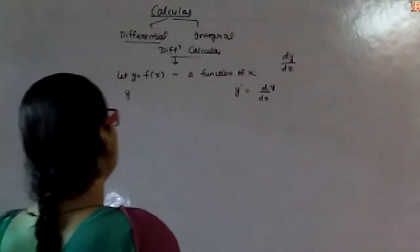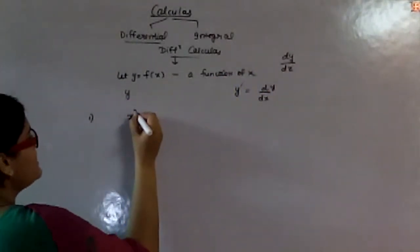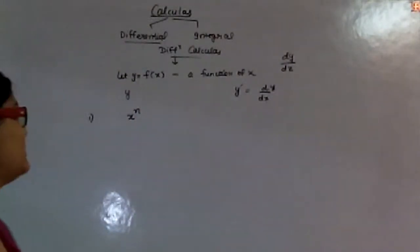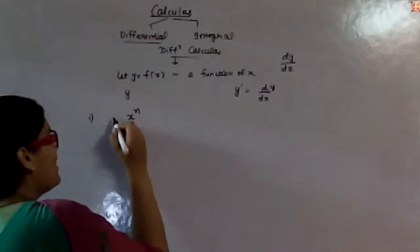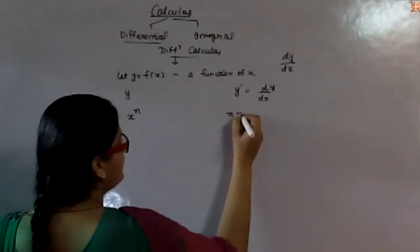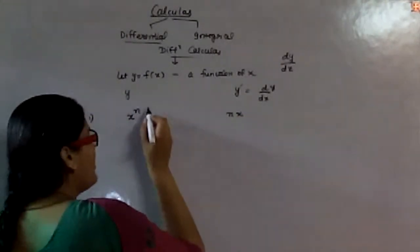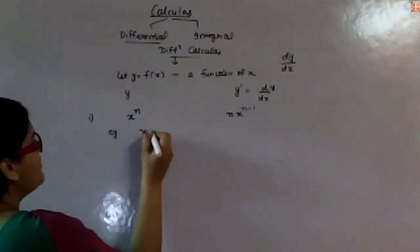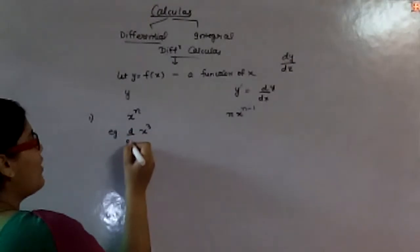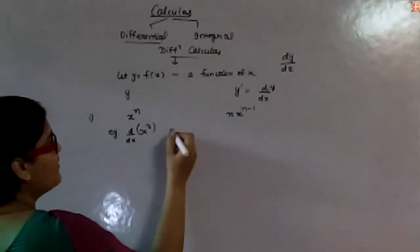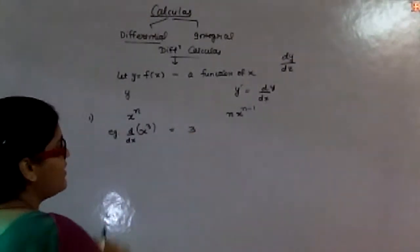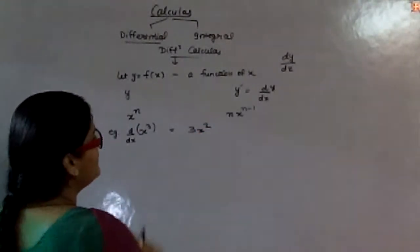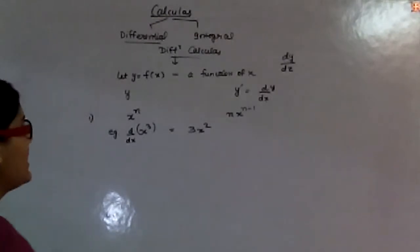Let us suppose our function is x raised to the power n. The differentiation becomes: this power comes in front as a coefficient, and the power is reduced by 1. For example, the differentiation of x squared gives us 2x.